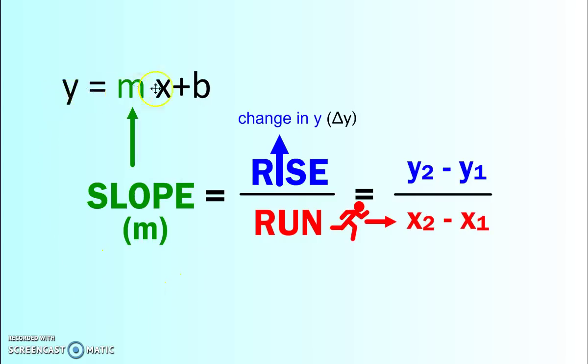So there you have it. y equals mx plus b, m is the slope, b is the y-intercept. And we will look a little bit more at slope, rise over run.